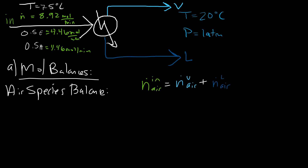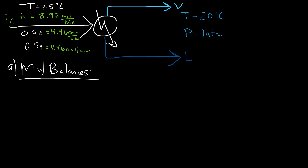Let's start with the air species balance. The molar flow rate of air in equals the molar flow rate of air in the vapor out plus the molar flow rate of air in the liquid out. Since this is a back-of-the-envelope calculation, it's safe to assume that any air entrained in the liquid ethanol stream is essentially zero. Therefore, all of the air coming in leaves as vapor: 4.46 moles per minute.